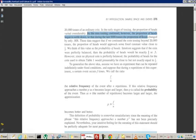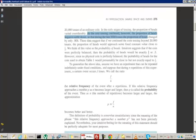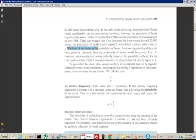They say as the coin tossing continued, the proportion of heads began to settle down, so that during the last 5,000 tosses, the proportion of heads changed by only 0.008. If you look at the last 5,000, from 15 to 20,000, it didn't change very much. That gives us the idea that it's sort of settling down. These data suggest that if we continued the coin tossing beyond 20,000, the proportion of heads would approach some fixed constant value, and it should be close to one-half. We think of this as the probability of heads.